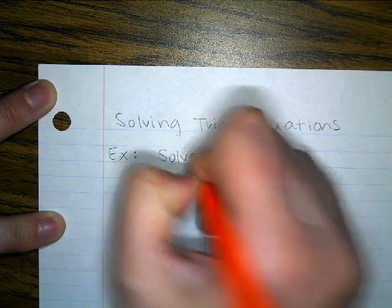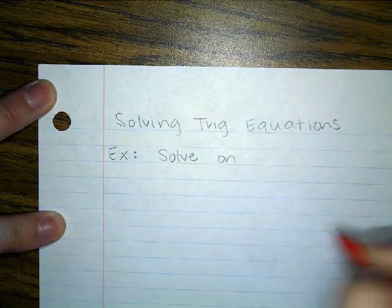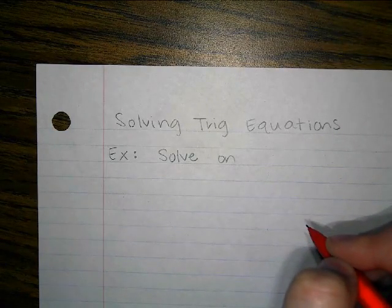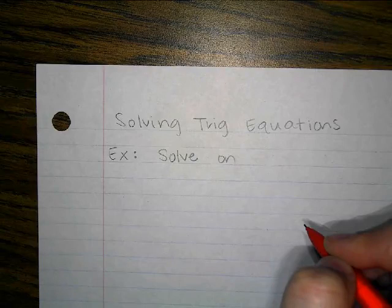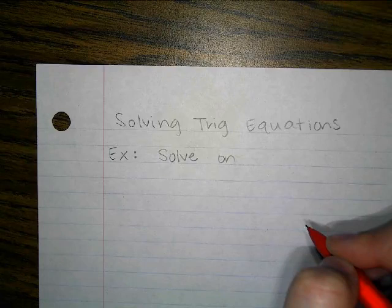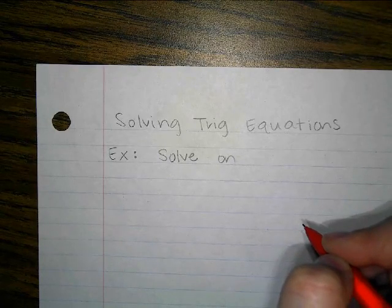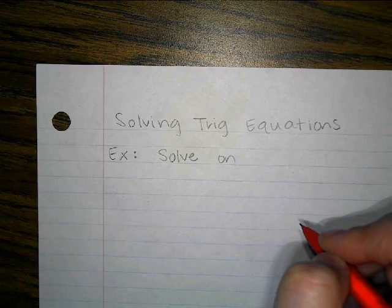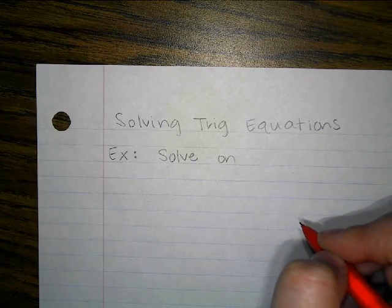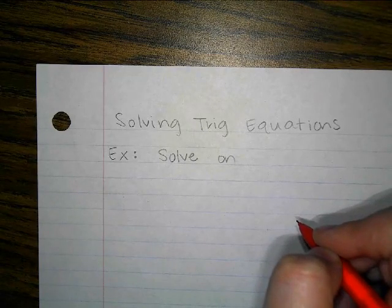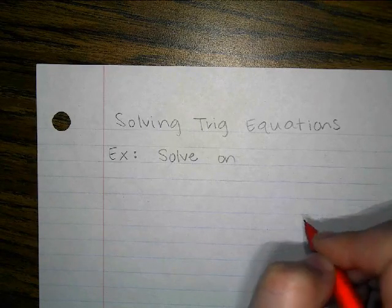Whenever you solve a trig equation, there are always several times that answer could happen because of the idea of coterminal angles. So pi/6 isn't the only answer — pi/6 is the same thing as 13π/6, which is the same thing as 25π/6, which is the same thing as 37π/6. You could just keep adding a full circle and it's the same answer, because that's how coterminal angles work.